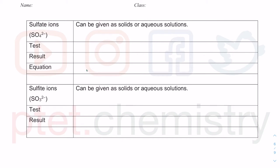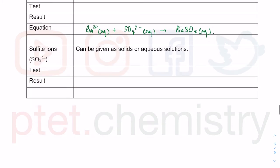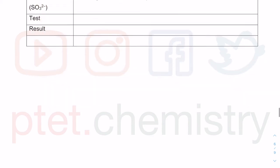For sulfate, we use barium nitrate or barium chloride. It's a precipitation reaction — it gives you a white precipitate, a very, very common reaction. For sulfide, you actually test it with acidified manganate VII, and it goes from purple to colorless.